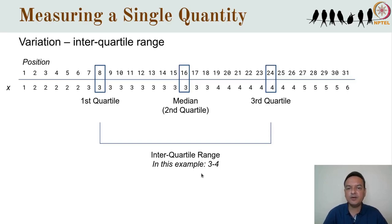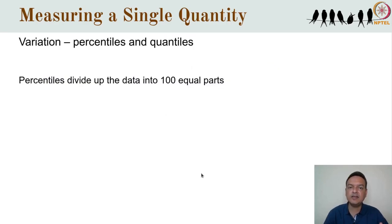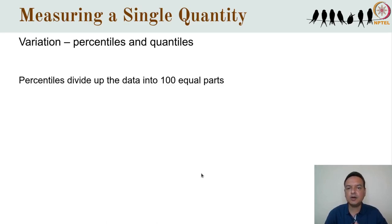We could use the range between the first and the third quartiles as our measure of variation — it tells us the limits within which half of the data lie. We could also divide the data into 100 equal parts, making these dividing points called percentiles. The 10th percentile is the dividing point between the lowest 10% and the upper 90% of values. The 25th percentile is the first quartile, the 50th percentile is the median, and the 75th percentile is the third quartile.